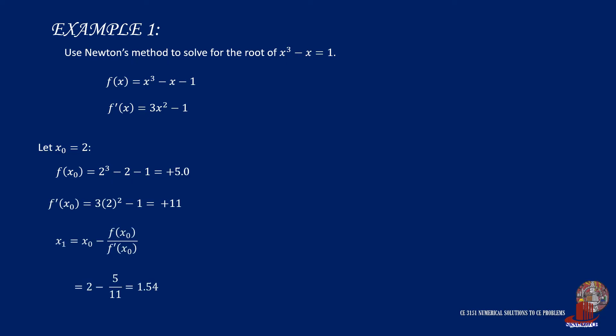Use these values in the formula and that is 2 less 5 all over 11, giving the value of 1.545454.